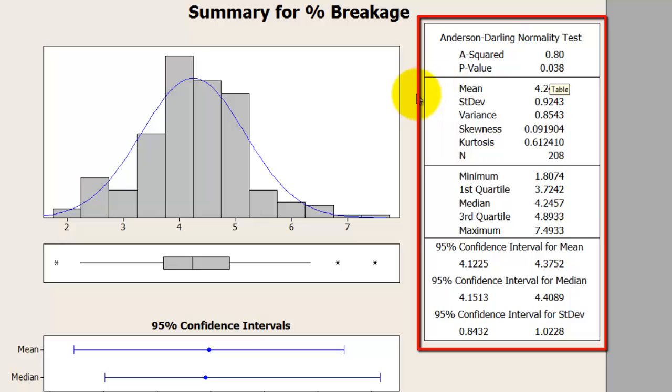Then it subsequently publishes for you information around means, standard deviation, variance, skewness, kurtosis, number of samples being observed, minimum, maximum, first quartile, median, third quartile, etc.